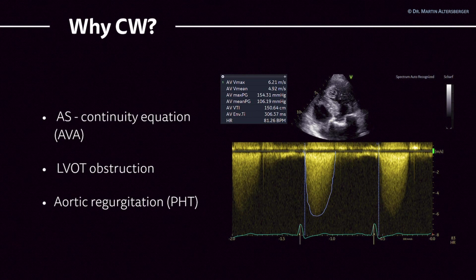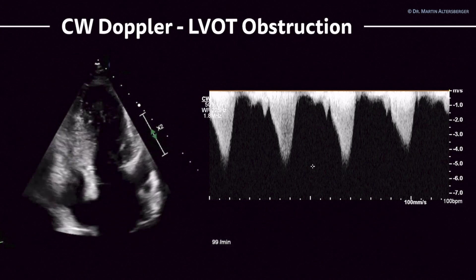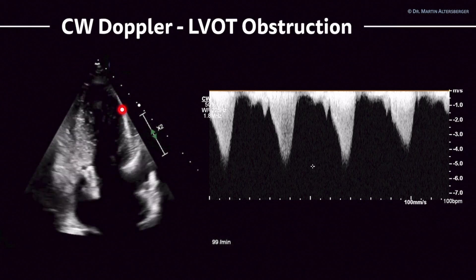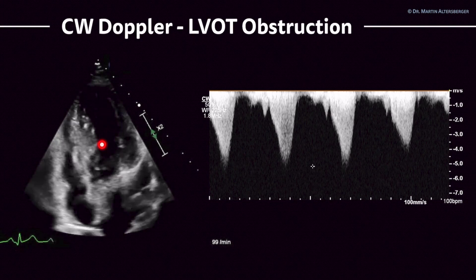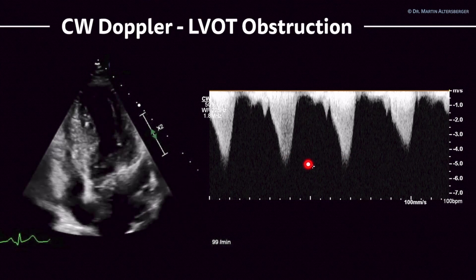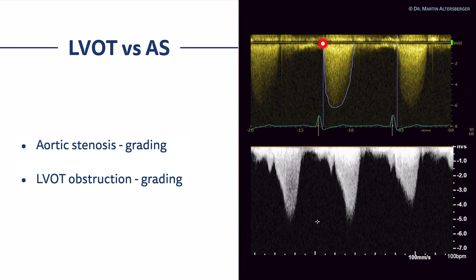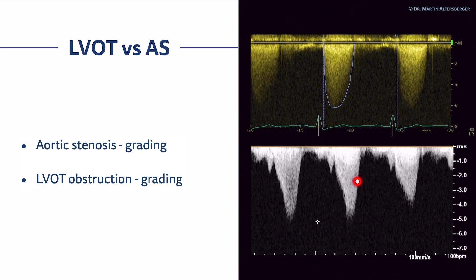Continuous wave Doppler can also quantify aortic regurgitation by means of the pressure halftime measurement. It was also used here to quantify LVOT obstruction in a patient with hypertrophic obstructive cardiomyopathy. You can see the severely thickened, hypertrophied left ventricle, the SAM phenomenon, and a true LVOT obstruction of 5 meters per second. LVOT obstruction and aortic stenosis are two different signals and disease entities. Aortic stenosis involves valve calcification and narrowing, while LVOT obstruction is dynamic and located before the valve. The aortic stenosis signal is more round-shaped, while LVOT obstruction is dagger-shaped — less steep at onset when truly in the LVOT, and even steeper and sharper when mid-ventricular.